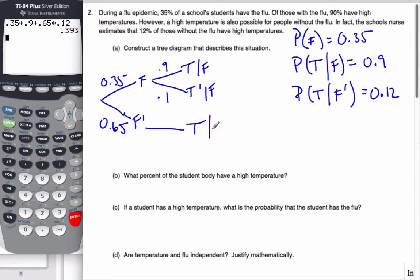This branch, I could have a temperature with no flu, or no temperature, no flu. That's what I wish, or hope I'm going to be, if this is going around. And so this is the 0.12 and the 0.88.